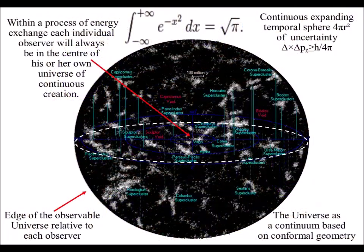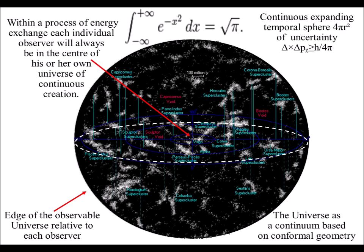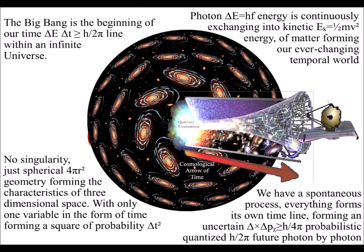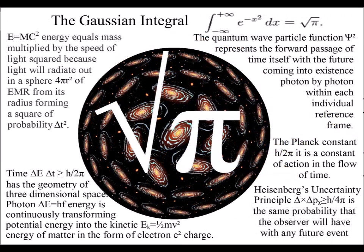In this theory, the universe is a light sphere of probability with no singularity, just spherical geometry forming the characteristics of three dimensional space with only one variable in the form of time.